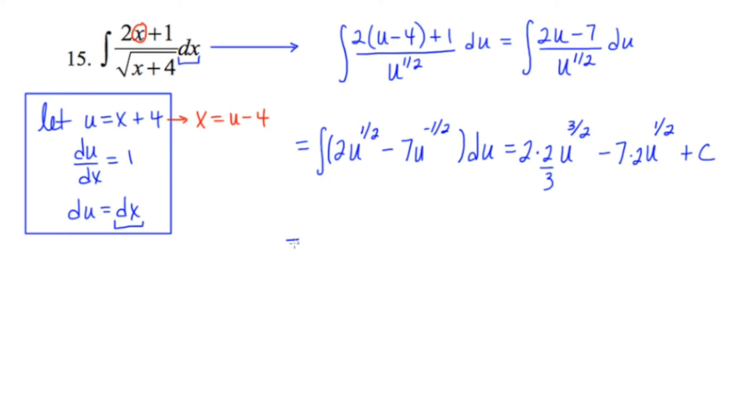I'm going to go ahead and clean that up now, saying 4 thirds u to the 3 halves minus 14u to the 1 half. And for the final step, I'm going to back substitute in for u.